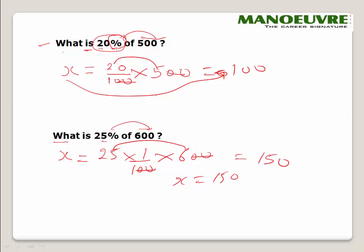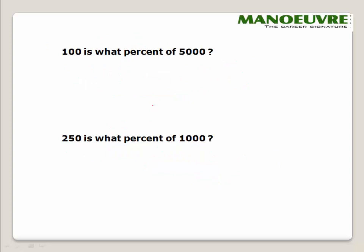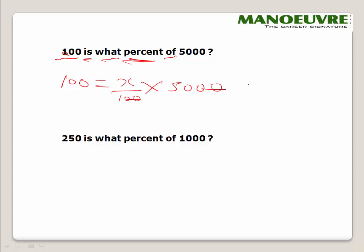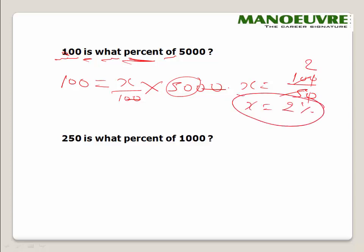Now what if the question is the other way around — the value is given and they ask for the percentage? For example: 100 is what percent of 5000? In mathematical form: 100 = x% × 5000, which gives 100 = x/100 × 5000. Solving: x = 100 × 100/5000 = 2. So 100 is 2% of 5000.